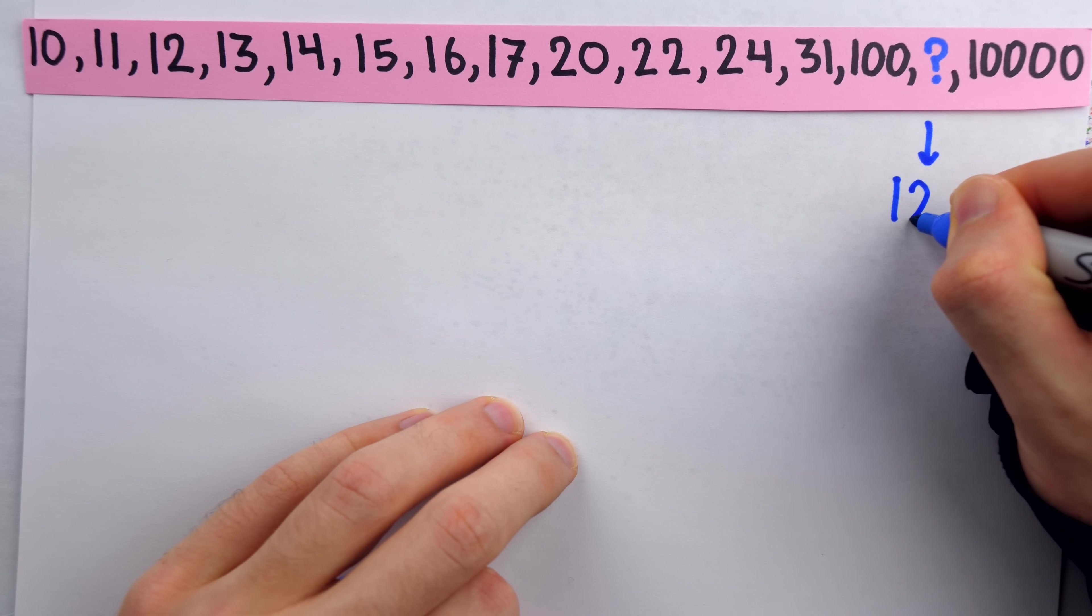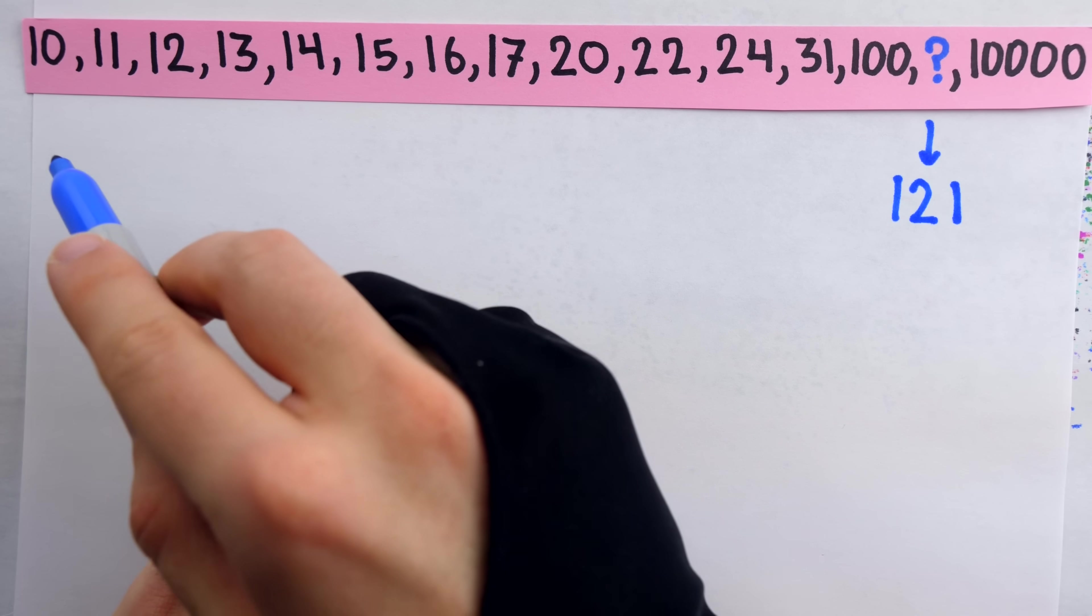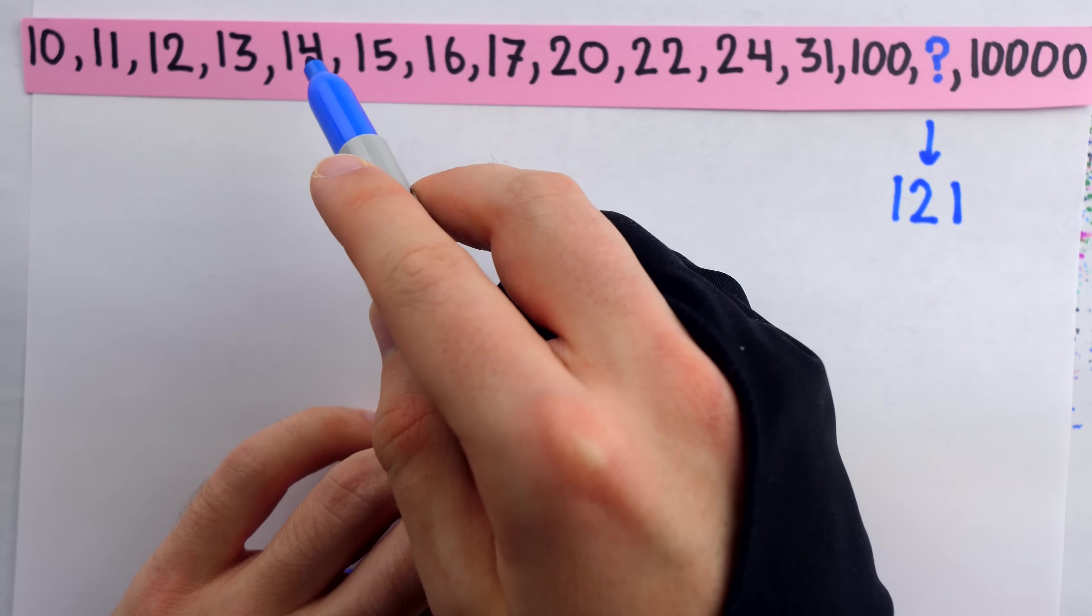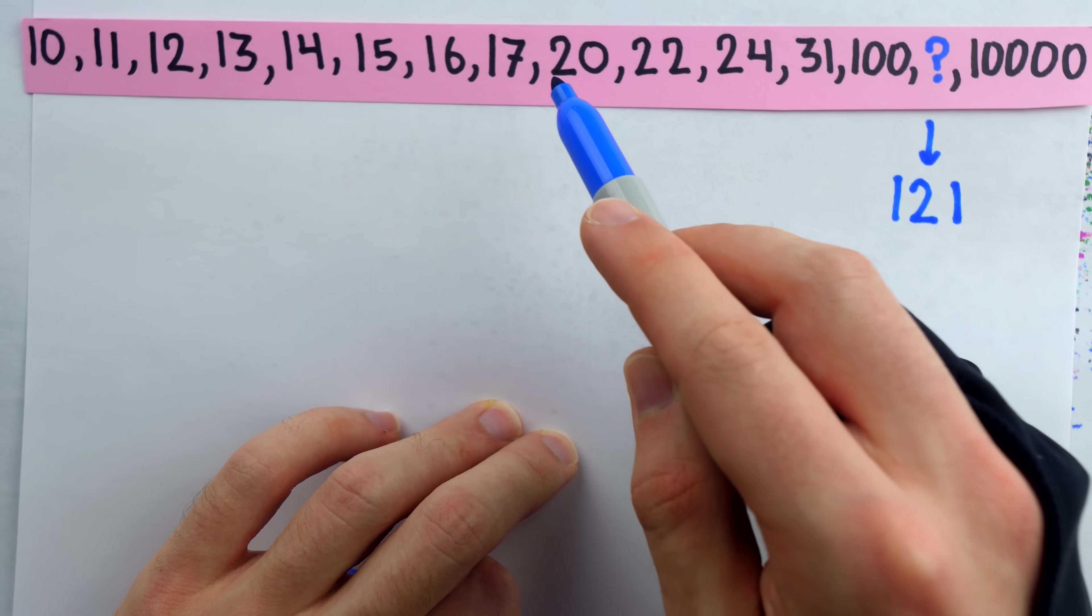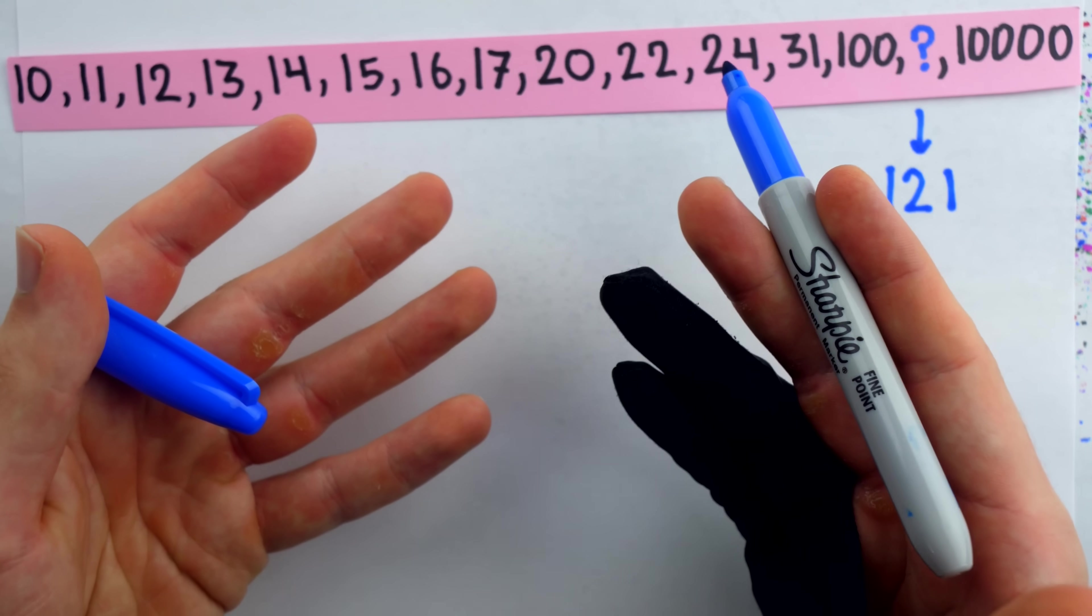The answer is one, two, one. The key is that these numbers are all the same. They're all actually 16, but written in different bases.